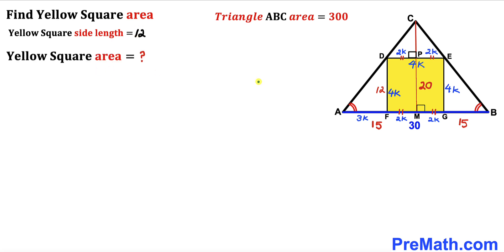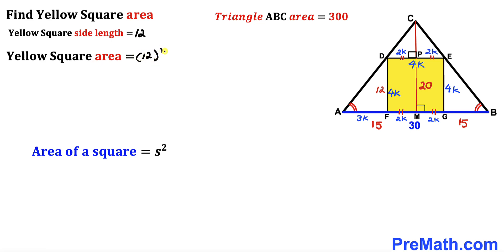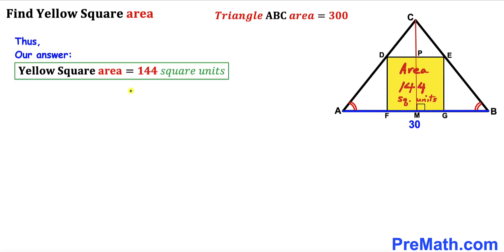Now let's calculate the area of yellow square DEGF. Recalling the area of a square formula: area equals S squared, where S is the side length. The area is 12 squared, which gives us 144 square units. The area of yellow square DEGF turns out to be 144 square units.